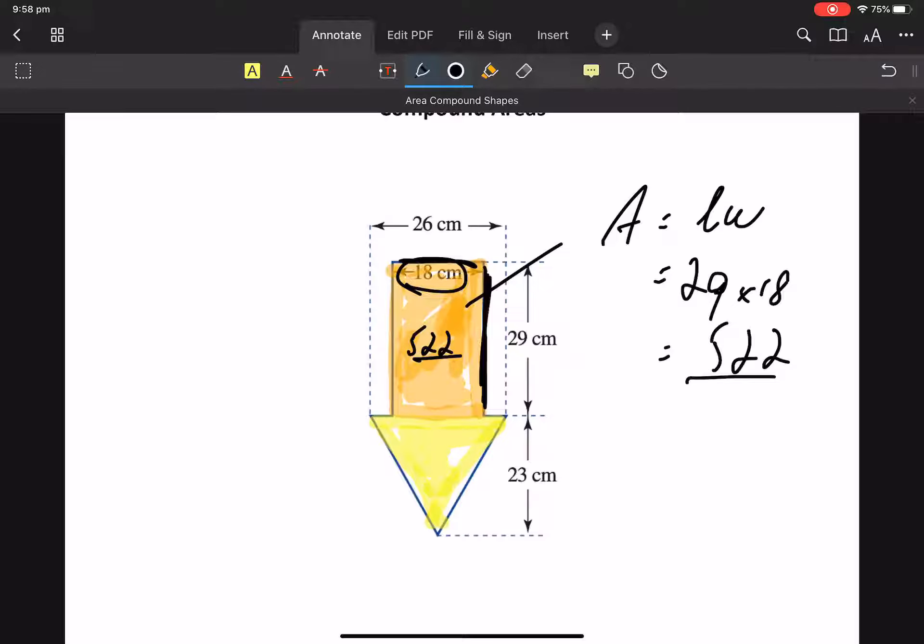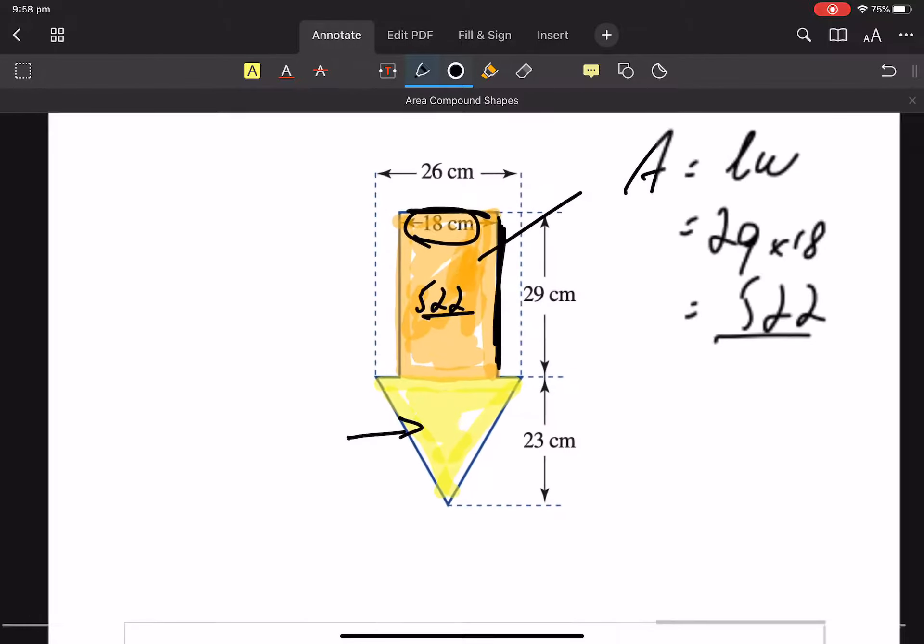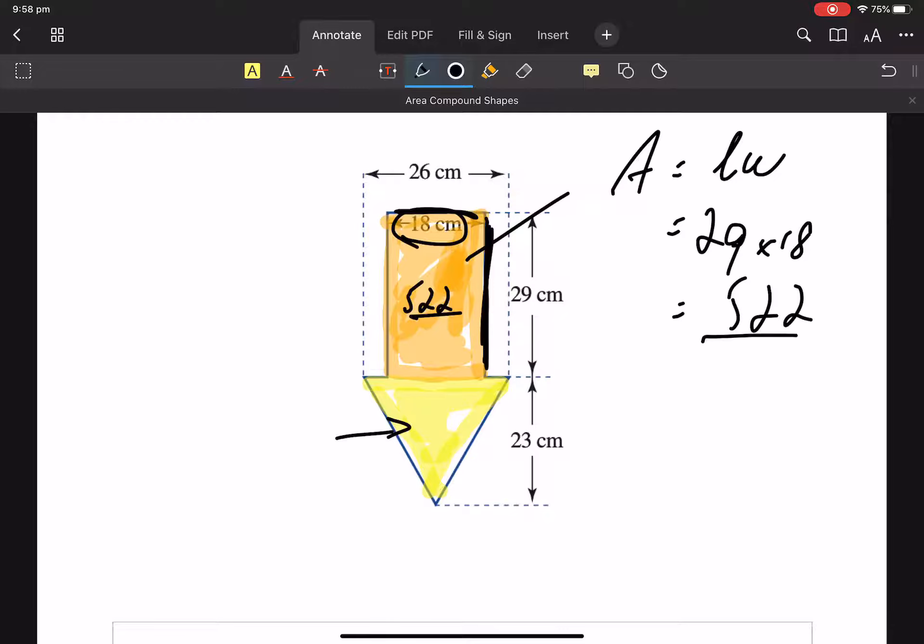Let's do the yellow now. Let's do the yellow. We're going to find that yellow. So it's a triangle. It's an upside down triangle. Can you see this 26 here? Is that length there? And that's 26.